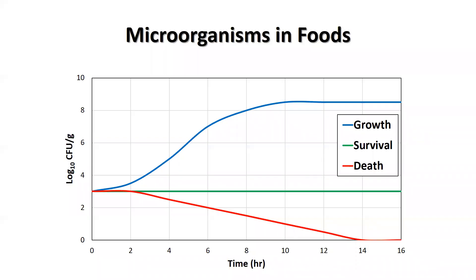This graph represents the different states in which bacteria, yeast, and molds can exist in foods. The horizontal axis is time in hours and the vertical axis is the number of microorganisms. Due to the fact that microorganisms can grow—meaning increase in number—very rapidly, their count is represented on a logarithmic scale. Here we arbitrarily started our curve at three logs or 1,000 microorganisms. The unit is colony forming unit or CFU per gram.